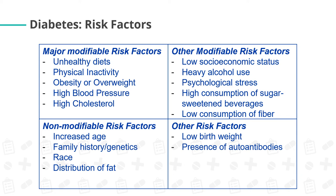Risk factors for diabetes mellitus: major modifiable risk factors include unhealthy diets, physical inactivity, obesity or overweight, high blood pressure, and high cholesterol. Other modifiable risk factors include low socioeconomic status, heavy alcohol use, psychological stress, high consumption of sugar-sweetened beverages, and low consumption of fiber. Non-modifiable risk factors include increased age, family history or genetics, race, and distribution of fat. Other risk factors include low birth weight and presence of autoantibodies directed against the pancreas.